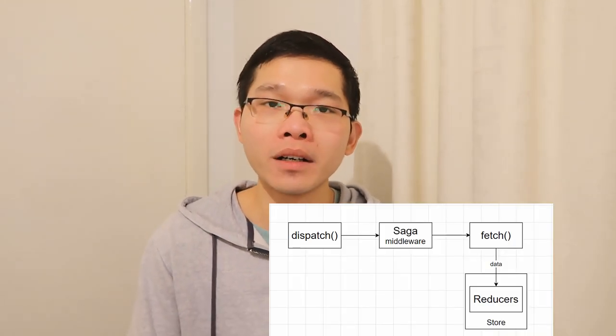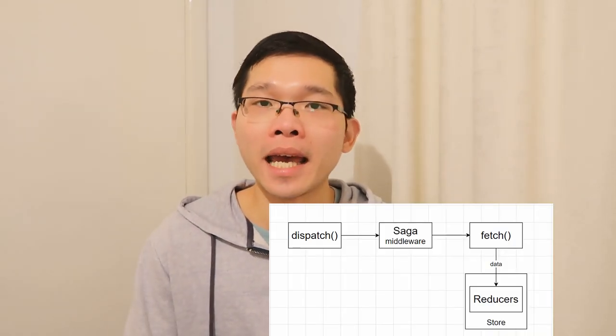Welcome back to a new course. As seen on the title, this is about React Redux Saga. It is a middleware library that allows Redux to make HTTP requests asynchronously — similar to async and await in JavaScript. This is a brief introduction and definition of Redux Saga. I'll also show you a diagram of how Redux Saga works.